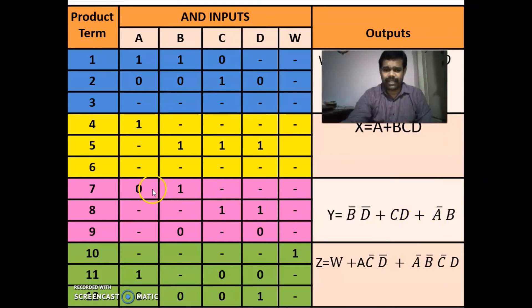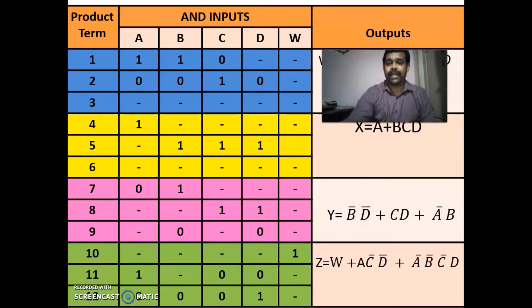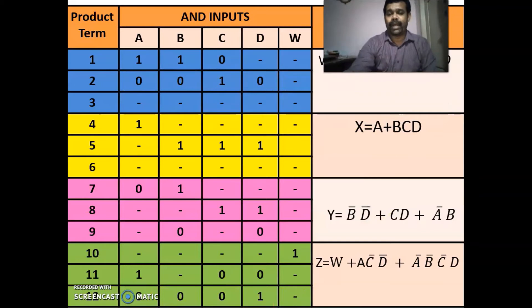For Z: put 1 in place of W with all dashes. Then AC-bar D-bar: A is 1, B is dash, C-bar is 0, D-bar is 0. Then A-bar B-bar C-bar D: 0, 0, 0 for A, B, C and 1 for D; W is not present so put a dash. We have completed the PAL programming table.